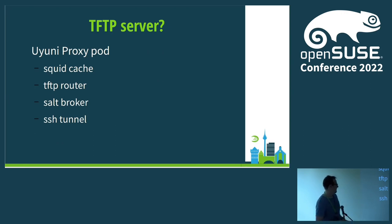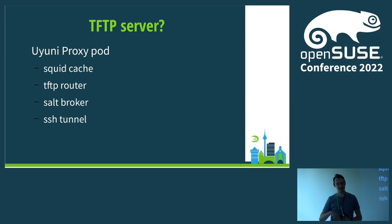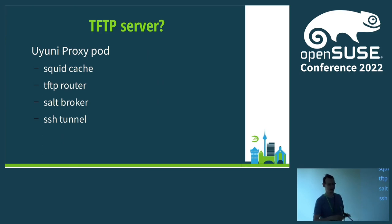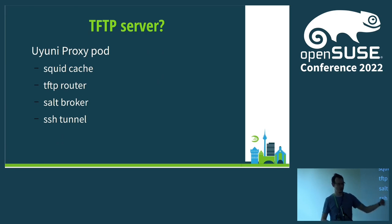The last two containers are the Salt Boot broker and an SSH tunnel. These exist because the proxy pod can run in a dedicated network space isolated from the general internet. Clients that can't access the regular internet go through the Salt broker for salt connections, through Apache for HTTP, and the SSH tunnel lets Uyuni access these machines through all that isolation.